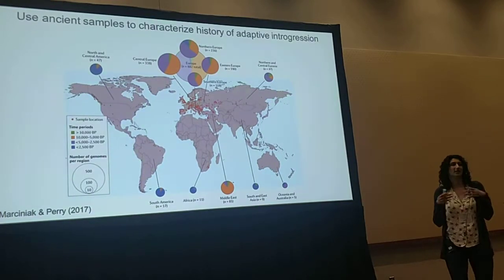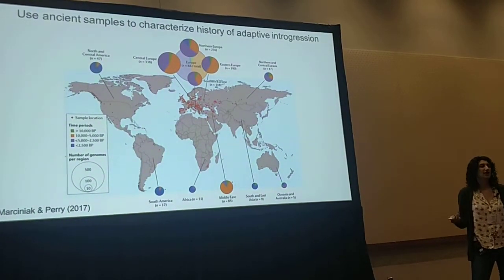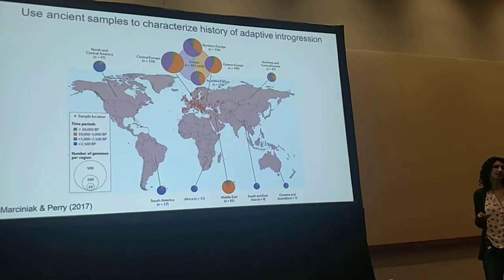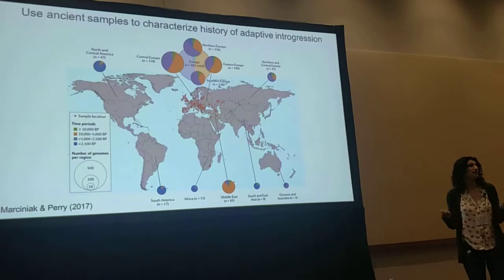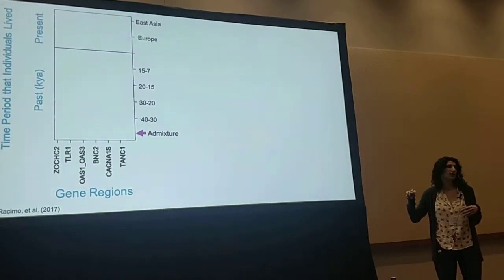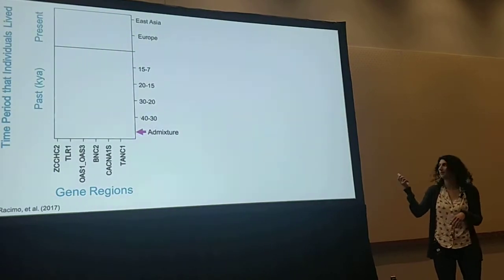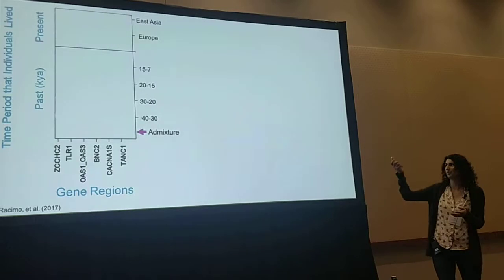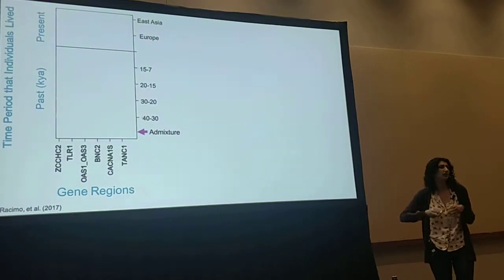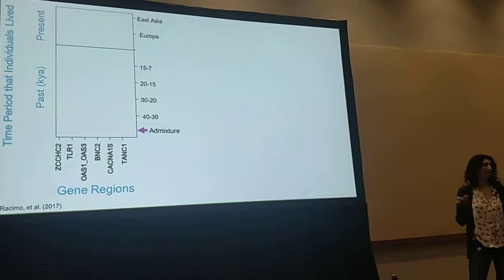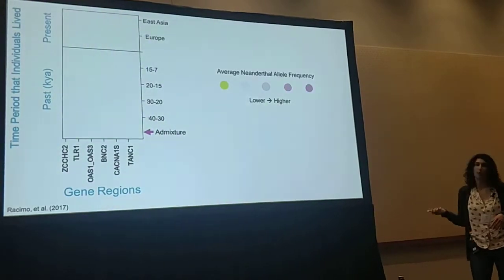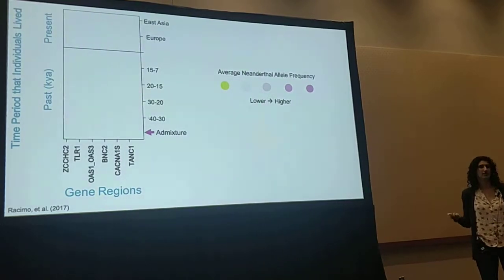What I wanted to do with these time series data is to observe the change in allele frequency of the beneficial Neanderthal allele over time. I took these ancient individuals from Europe and grouped them into populations based on the time period that they were sampled. On the vertical axis, I'm ordering these populations over time from the past on the bottom to the present on the top. For every gene region and population, I'm going to plot a point that tells us the average Neanderthal allele frequency in that gene region.